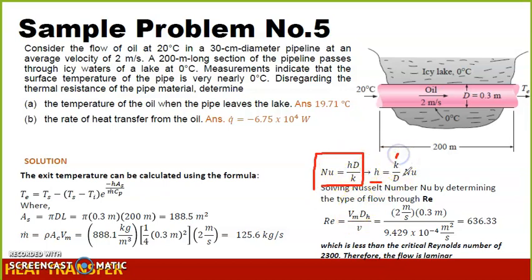We already have K, we already have D, we don't have the Nusselt number yet. We also know from experience that in order to solve the Nusselt number, we need to solve first the Reynolds number. We are already very much familiar with the formula for Reynolds number.